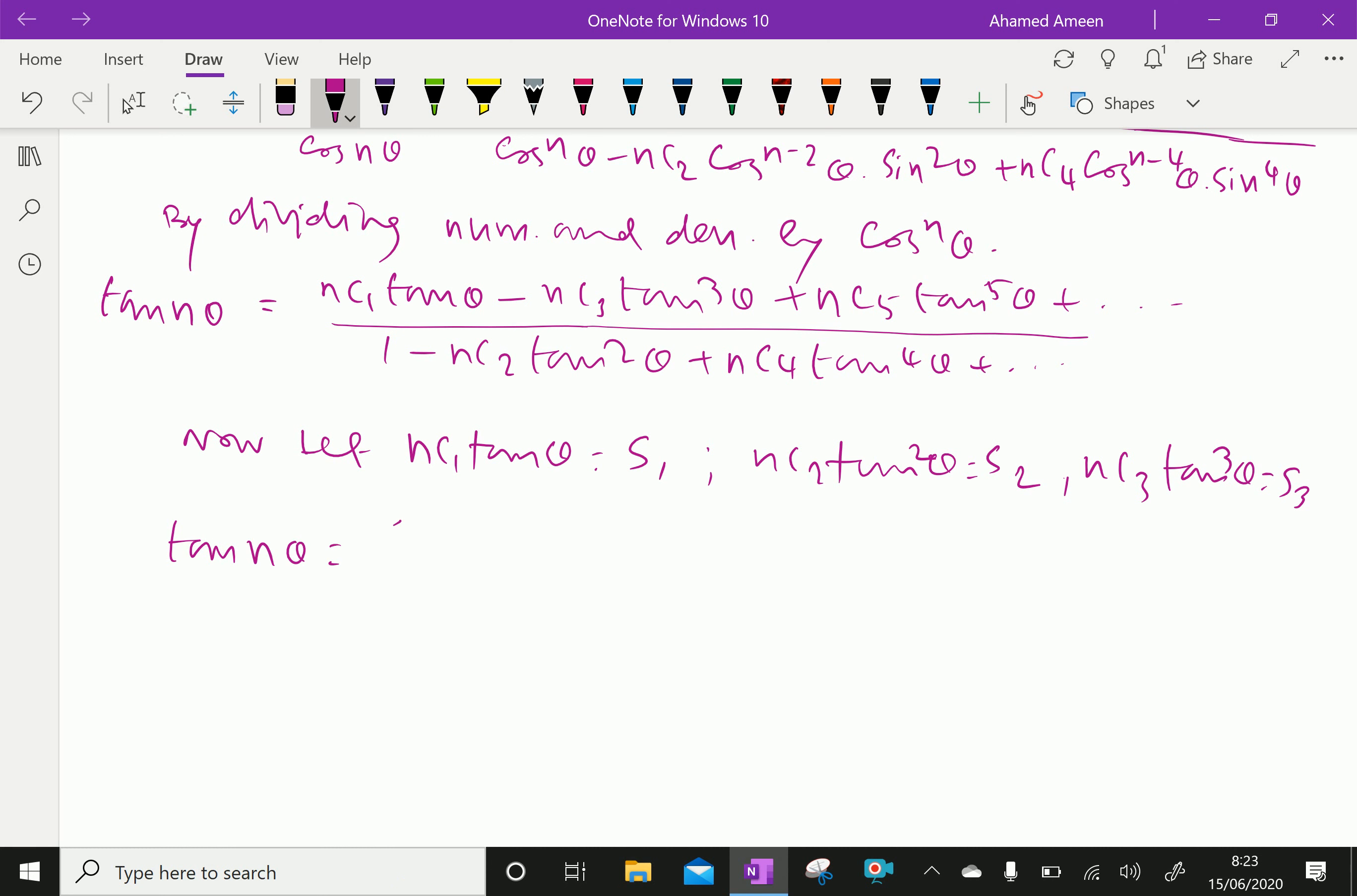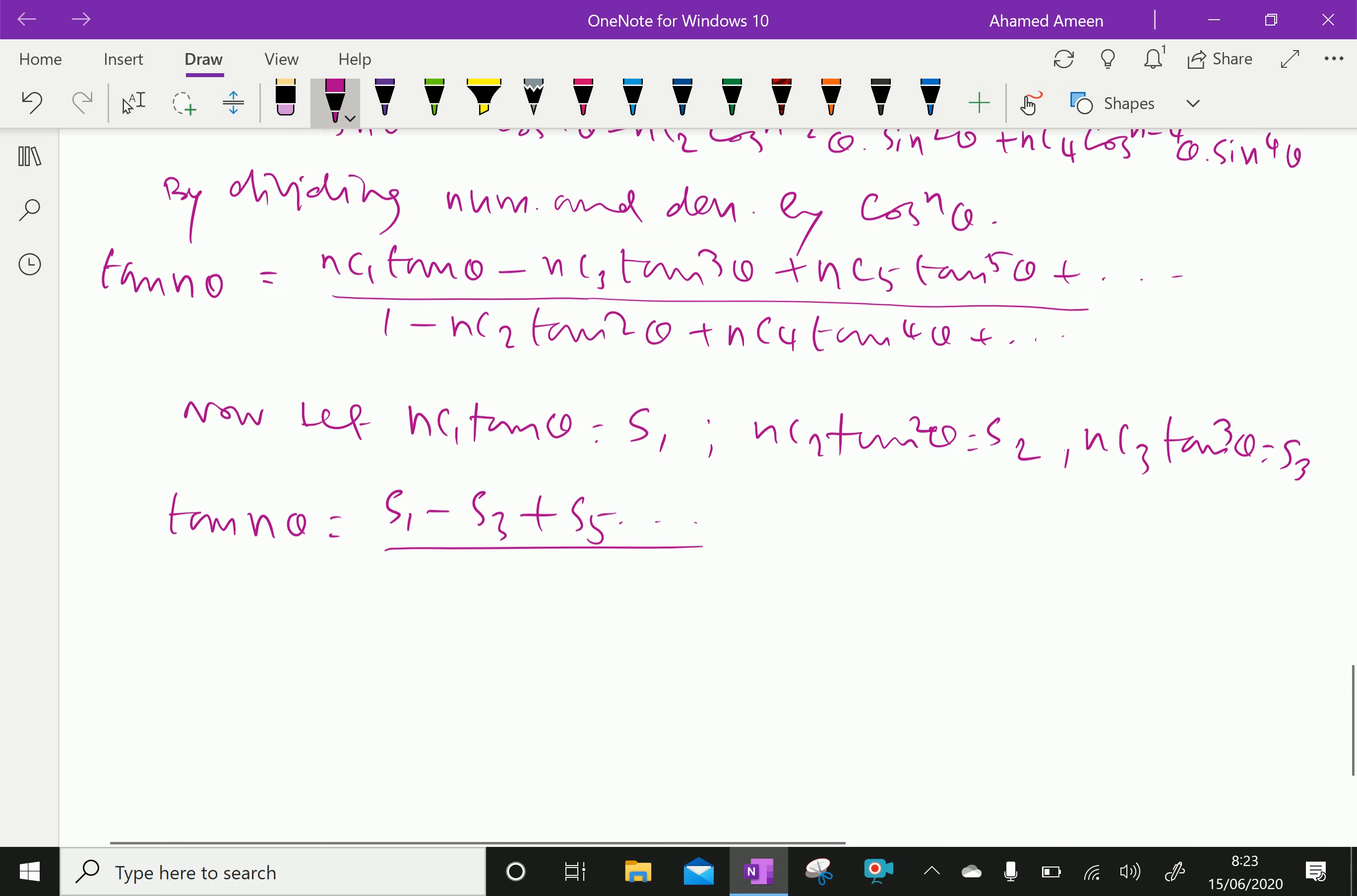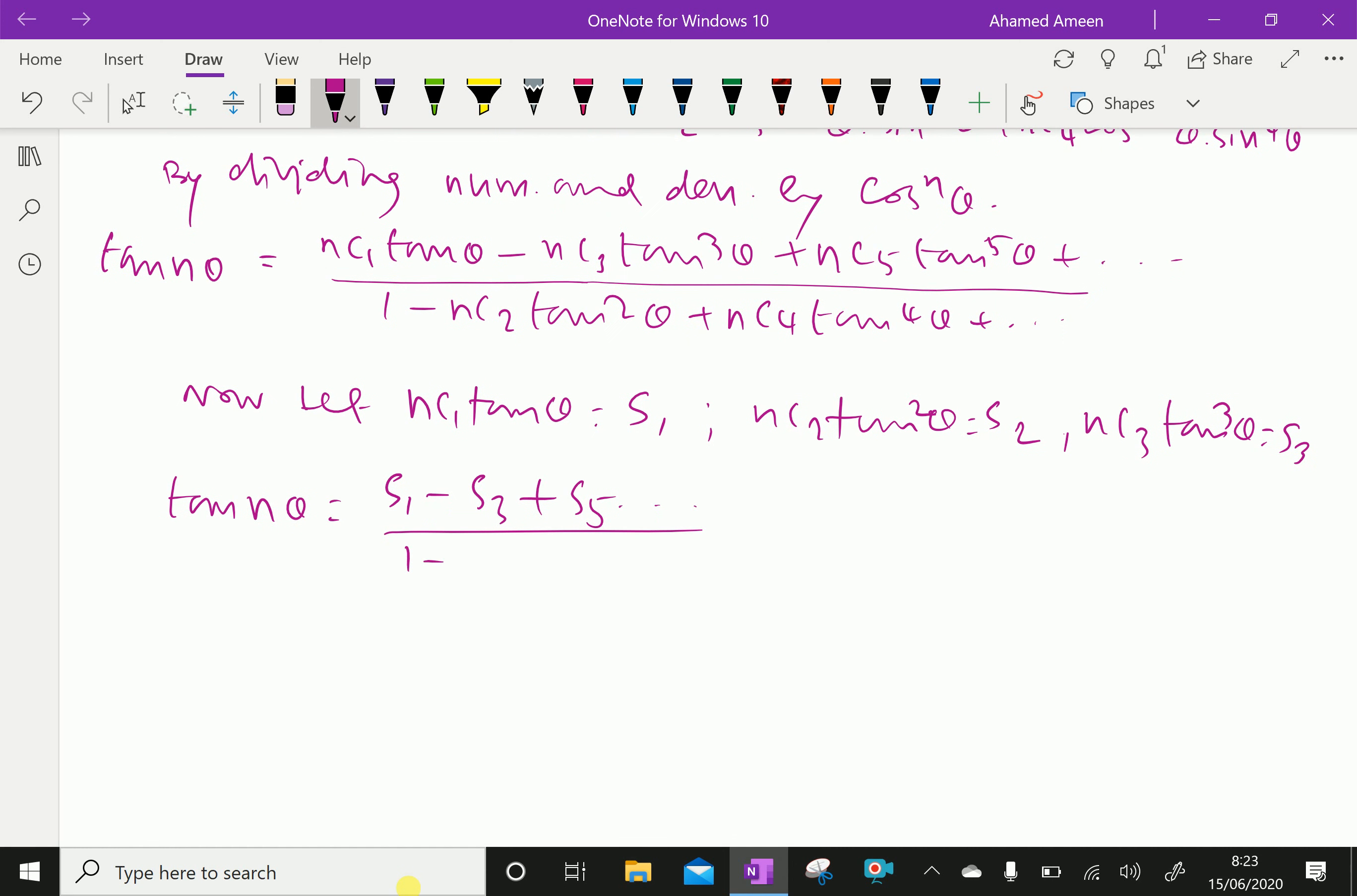We can express tan n theta in simpler form like S1 minus S3 plus S5, all over 1 minus S2 plus S4 minus S6.